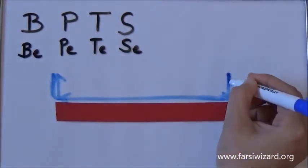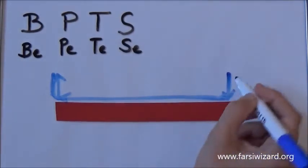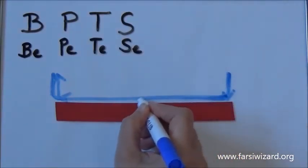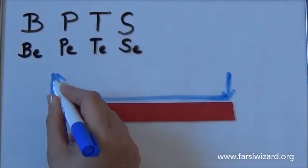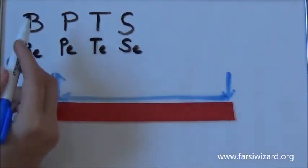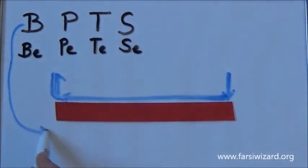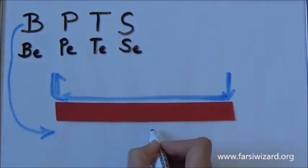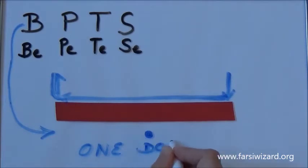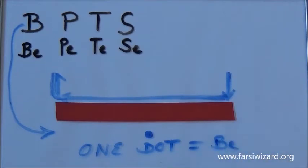So down, on the line, and up. Try to practice this particular movement. As you can see here, I have put a red tape as a line reference. Basically this part of the letter would be written above the line. Now let's put the dots. If you put one dot relatively in the middle of this letter below, it will give you the letter B — one dot below.